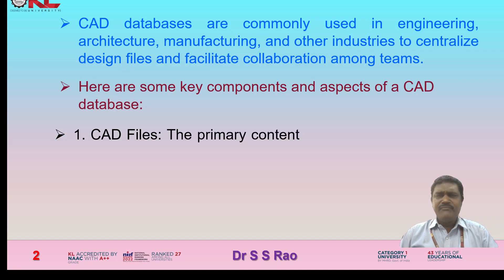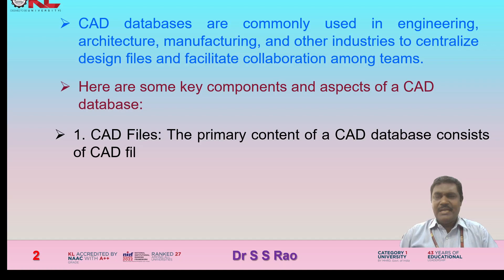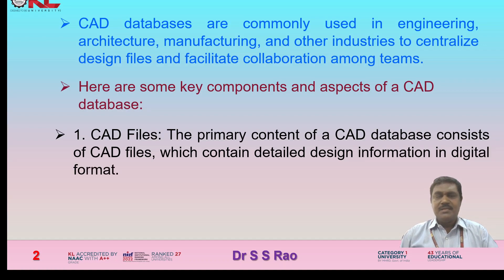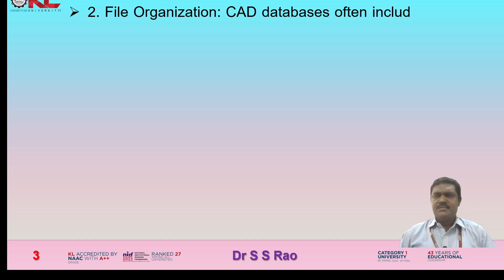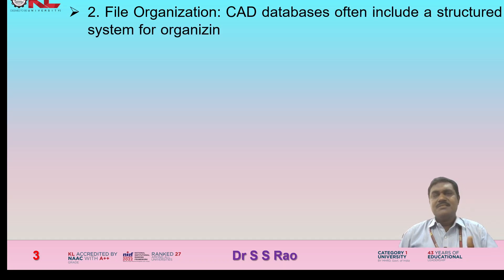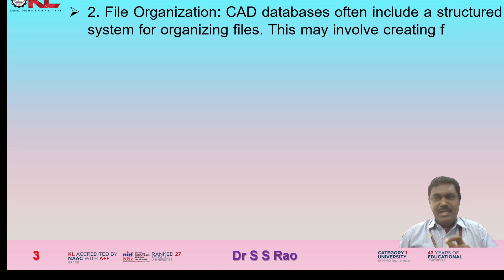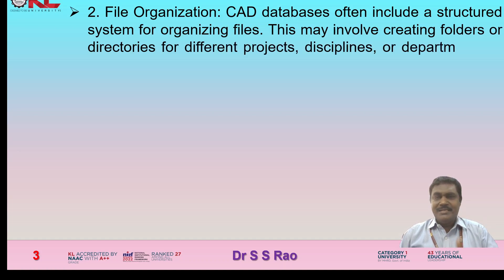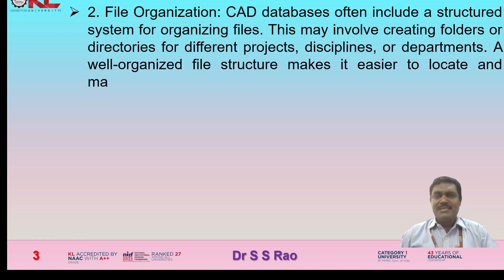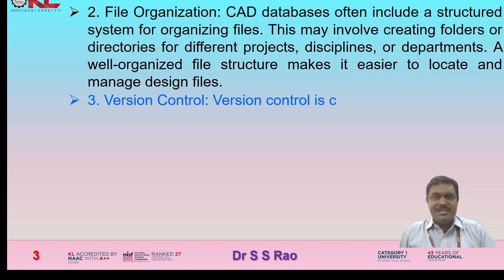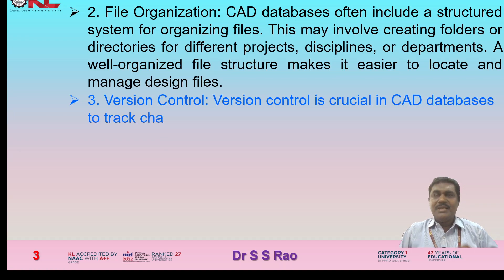First is CAD files — the primary content of a CAD database consists of CAD files which contain detailed design information in digital format. Second is file organization — CAD databases often include a structured system for organizing files, which may involve creating folders or directories for different projects, disciplines, or departments. A well-organized file structure makes it easier to locate and manage design files.